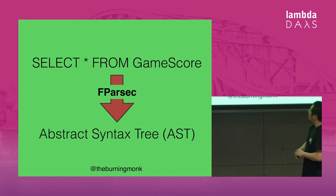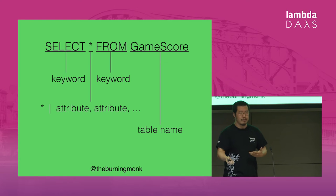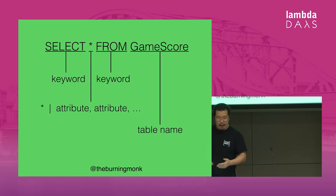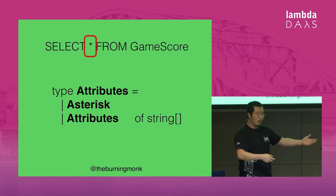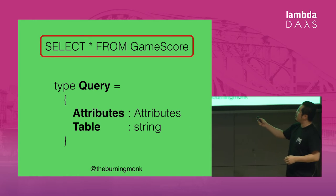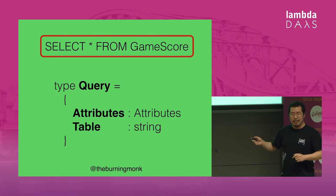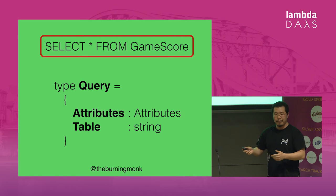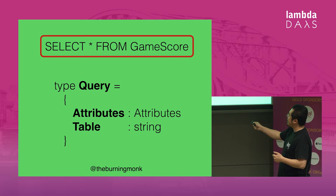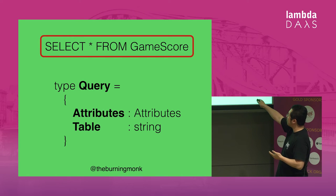With a simplified example, we want to take a simple query and turn it into an abstract syntax tree. We can start by dissecting the query into separate components: keywords like SELECT and FROM, a table name, and a way to specify either a star or a comma-separated list of attribute names. We can represent this using a union type — think of it like enums in C# but more powerful, where each case can be associated with an arbitrary set of types. In this case, the Attributes type can be either Asterisk or Attributes associated with an array of strings.